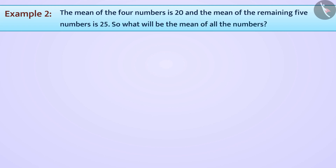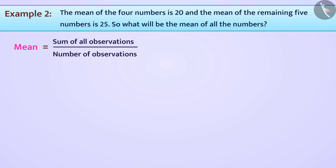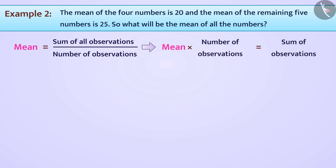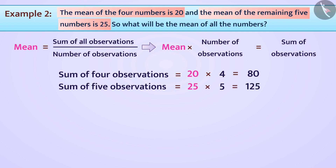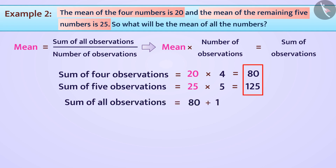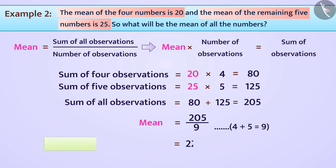We know that mean equals sum of all observations divided by number of observations, which also means mean multiplied by number of observations equals sum of observations. The sum of 4 observations is 20 times 4, which equals 80. The sum of 5 observations is 25 times 5, which equals 125. The sum of all 9 observations is 80 plus 125, which equals 205. Therefore, the mean is 205 divided by 9, which equals 22.77.